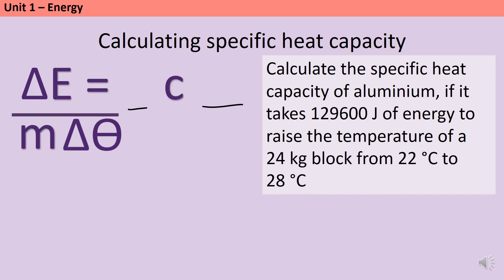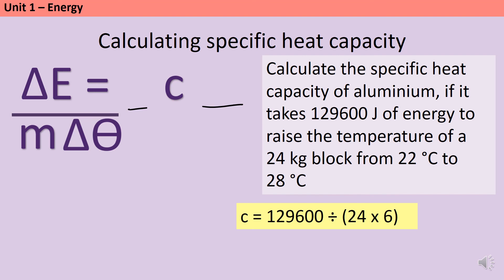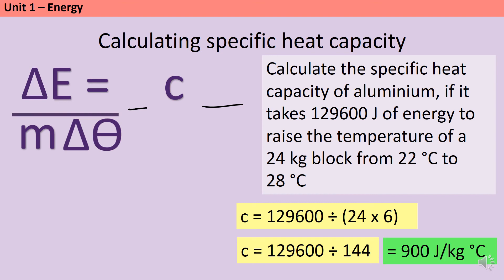A typical exam question might ask you to calculate the specific heat capacity of aluminium if it takes 129,600 joules of energy to raise the temperature of a 24 kilogram block from 22 degrees C to 28 degrees C. First, work out the temperature change: 6 degrees C. Then: 129,600 divided by 24 multiplied by 6 — that's 129,600 divided by 144 — giving an answer of 900 joules per kilogram degree C.